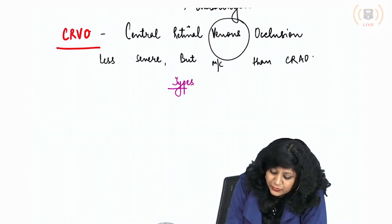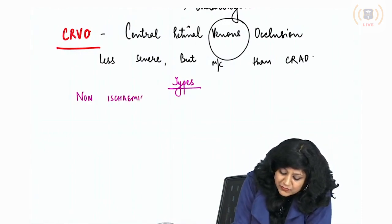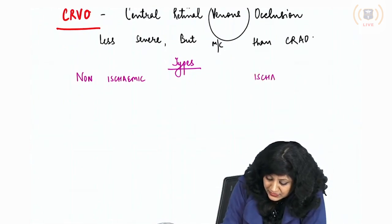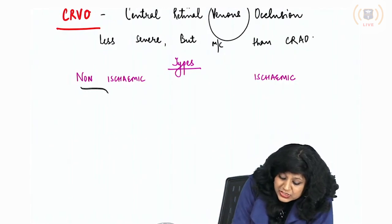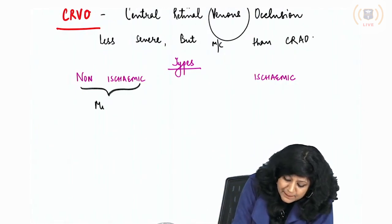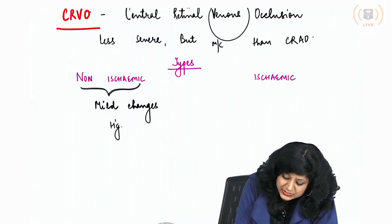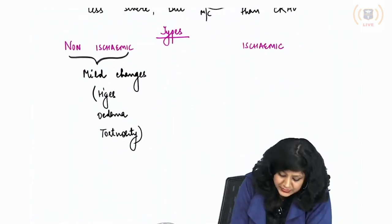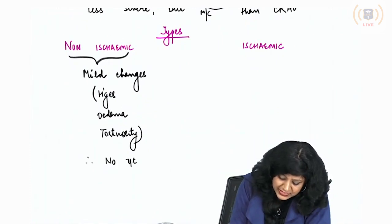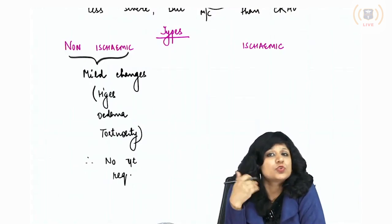The two types of CRVO are: non-ischemic variety and ischemic variety. The non-ischemic variety will show only mild changes in hemorrhages, edema, and tortuosity. Most of the time, no treatment is required since collaterals are forming and there is no ischemia in the retina.